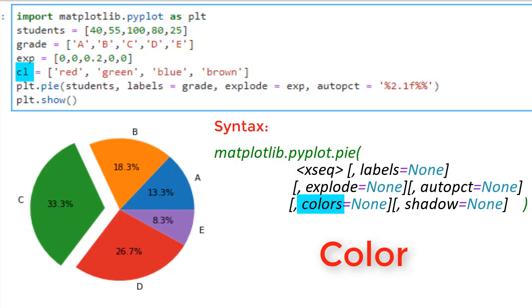Here we can create another sequence of colors of the same size as student data and put in the colors requested. Then we can add it to the pie function as argument to colors.